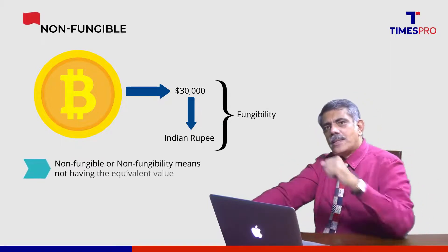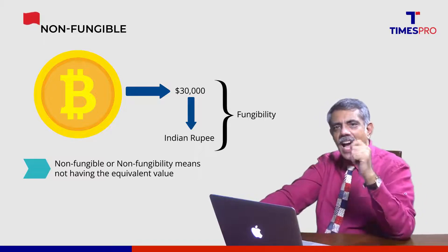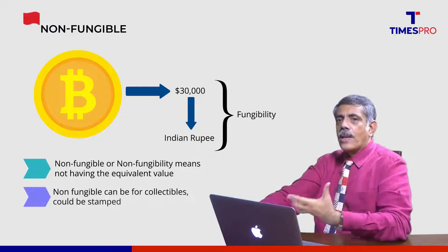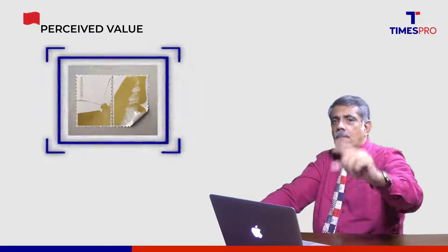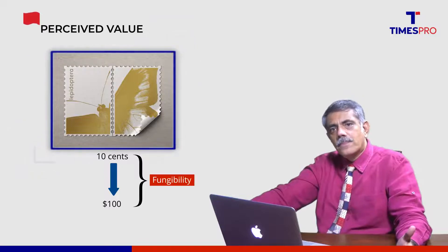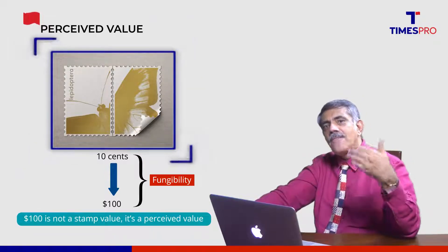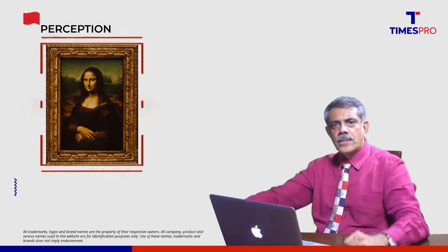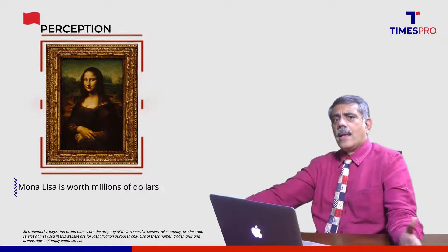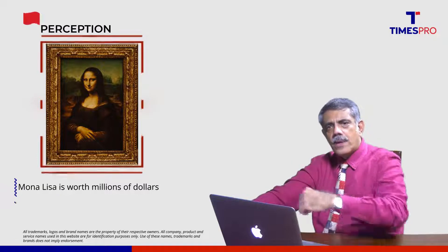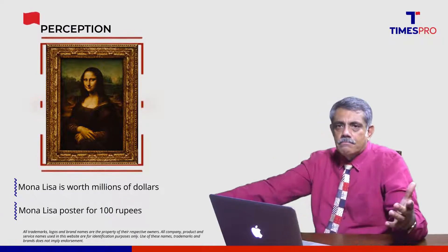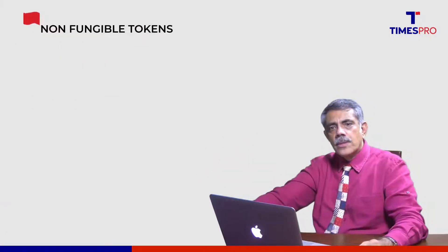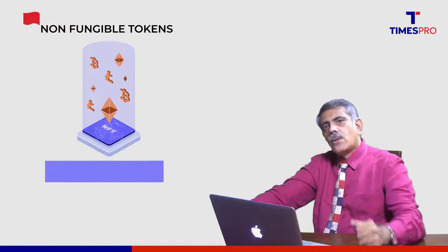Non-fungibility means not having equivalent value. That can apply to collectibles — for example, a stamp with a face value of 10 cents but a market value of $100. That's non-fungible, because what you're paying for is the perceived value, not the face value. Think of the Mona Lisa — worth millions of dollars to some, while others say they'd just buy a poster at the railway station for a hundred rupees. If you want to own something original and are ready to pay for it, that's where non-fungible tokens come in.